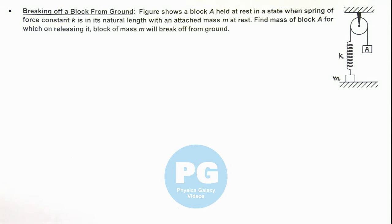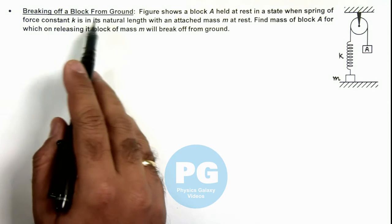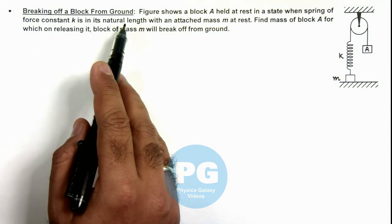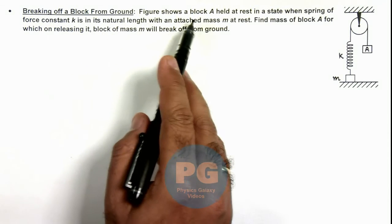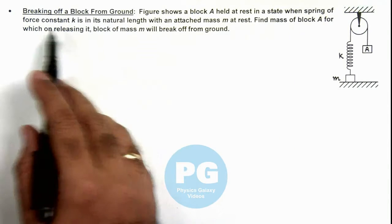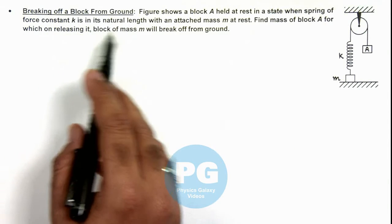In this illustration, we'll discuss about breaking off a block from ground. And here the figure shows a block A held at rest in a state when spring of force constant k is in its natural length.